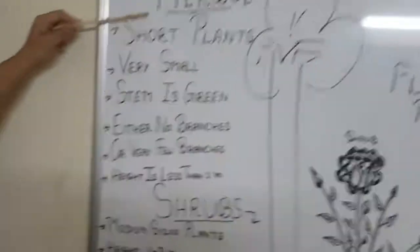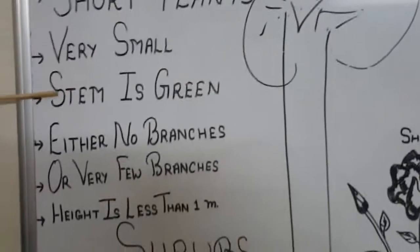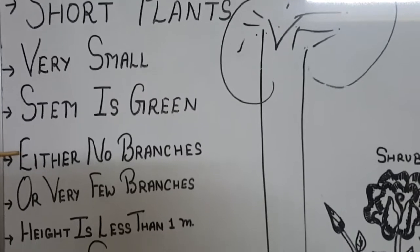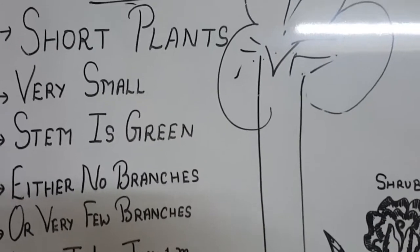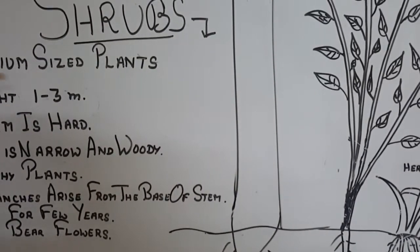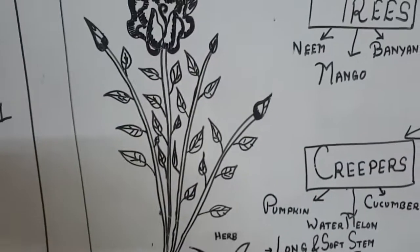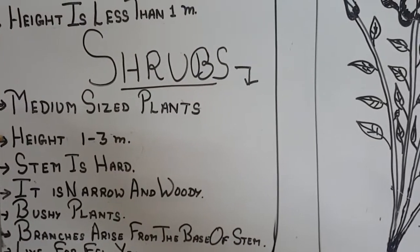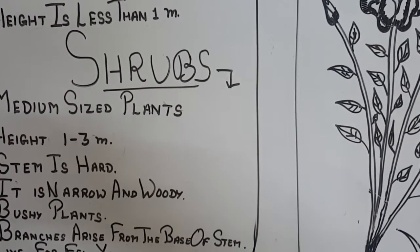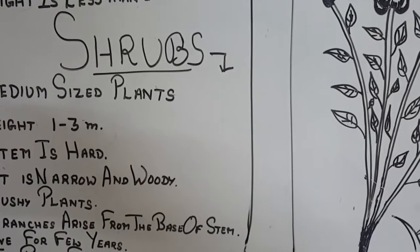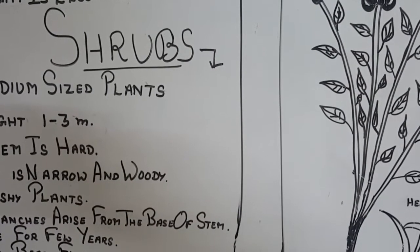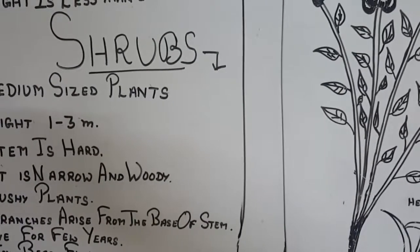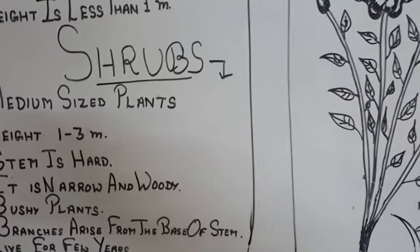Herbs are short plants with a green-colored stem. They have either no branches or very few branches, and their height is less than 1 meter. Shrubs are medium-sized plants with a height of 1 to 3 meters. Their stem is hard, narrow and woody — they are bushy plants. Their branches arise right from the base of the stem, they live for a few years, and they bear flowers. A good example is the rose plant.